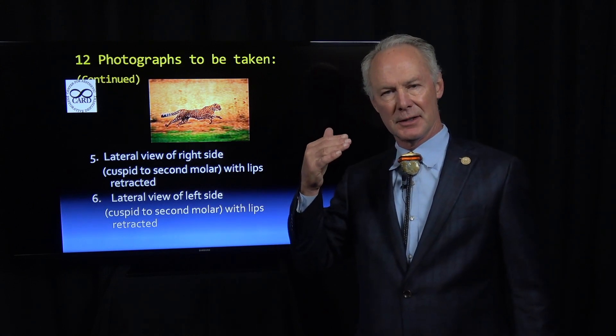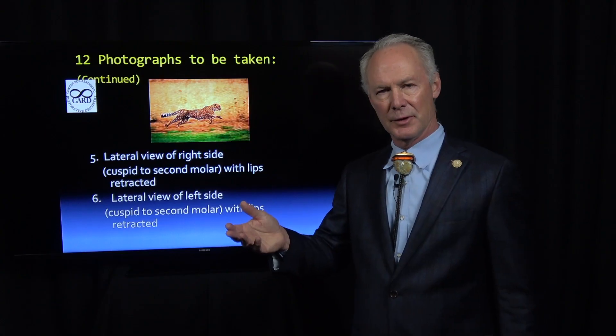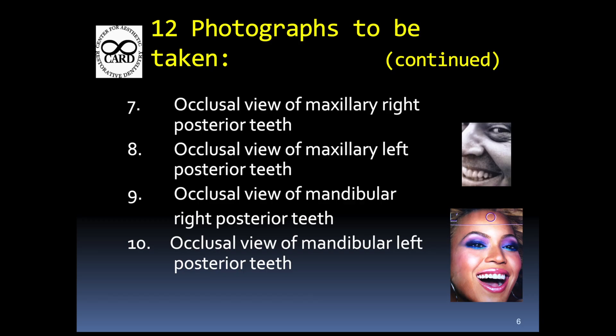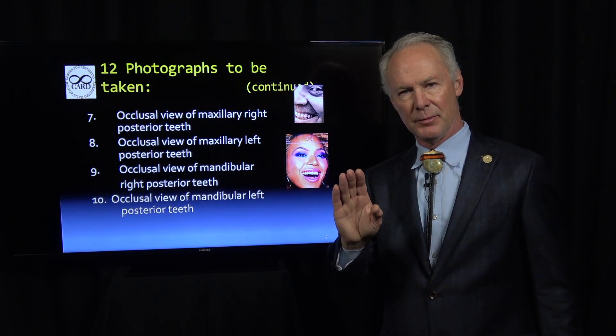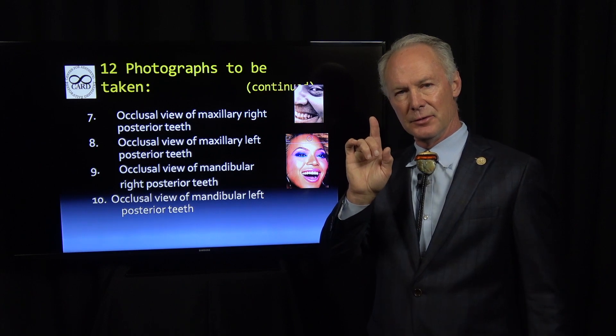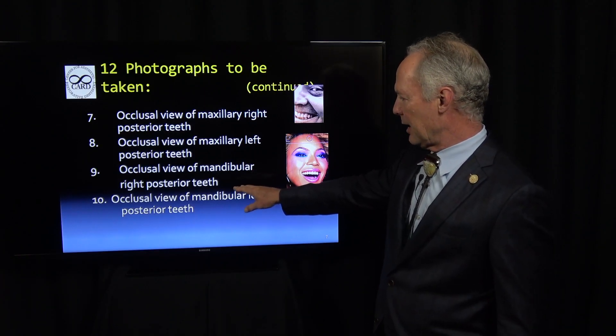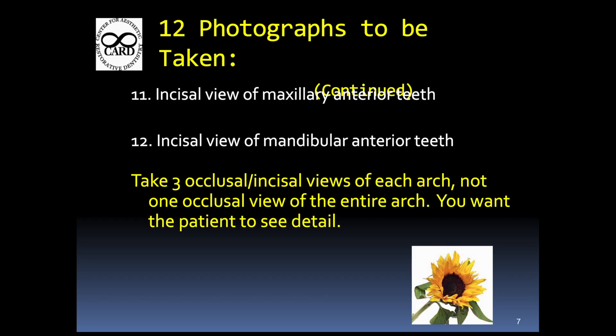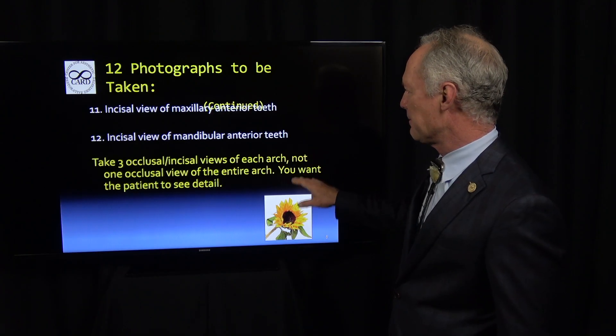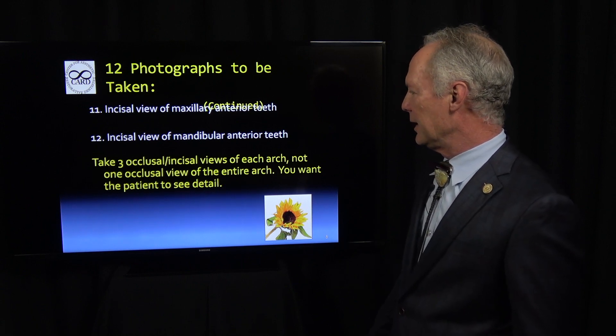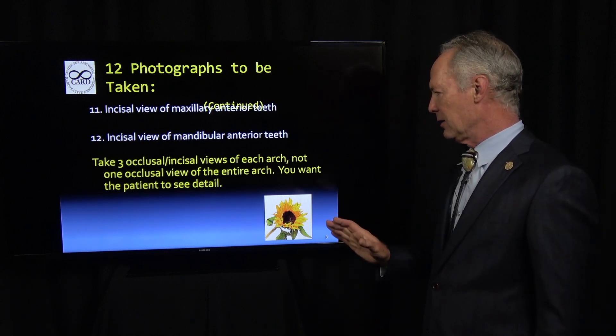The lateral view shows any unsightly old porcelain metal crown margins, abfraction, and gingival recession. Then a lateral view of the left side, and an occlusal view of the maxillary right posterior teeth. This is critical — it's very important that it be taken at a right angle to the teeth so you can see any broken fillings or cracks in the teeth. Occlusal view of the maxillary left posterior teeth — take the right side and the left side separately. Then an occlusal view of the mandibular right posterior teeth, an occlusal view of the left posterior teeth, an incisal view of the maxillary anterior teeth, and an incisal view of the mandibular anterior teeth. Take three occlusal/incisal views of each arch, not one occlusal view of the entire arch.